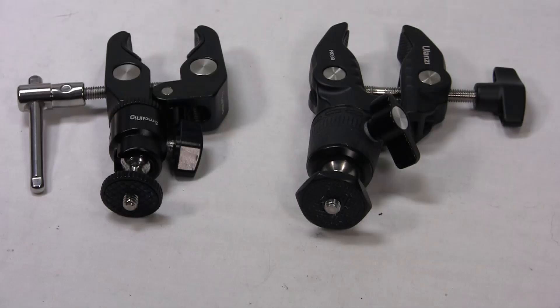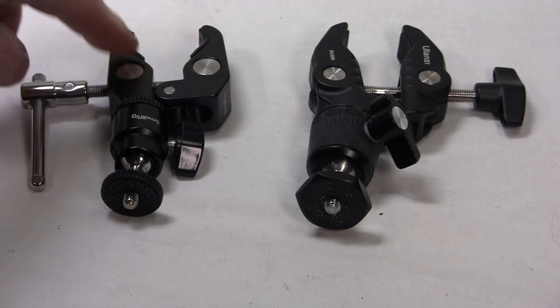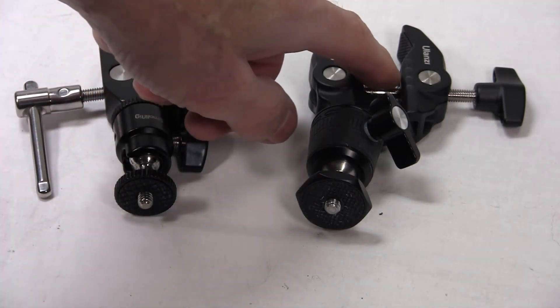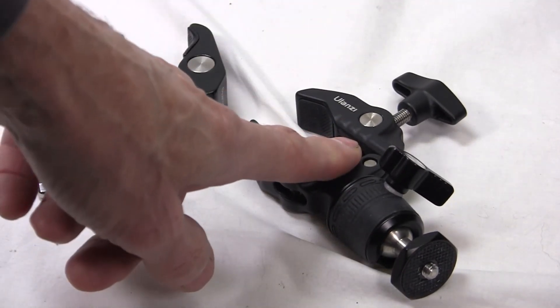I'm comparing two tube clamps or pole clamps. This is the Small Rig and this is Ulanzi. And I got this one on AliExpress.